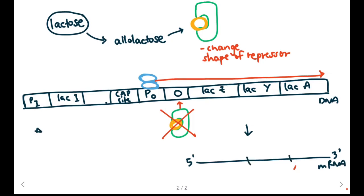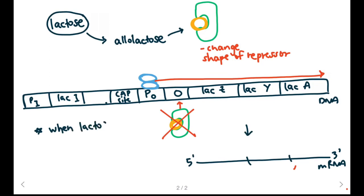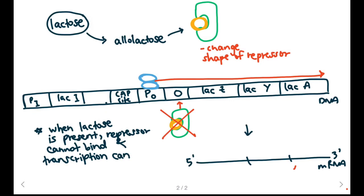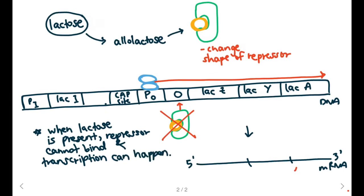So the key idea is that when lactose is present, the repressor protein cannot bind to the operator and transcription can occur.